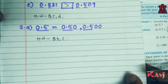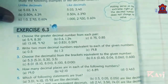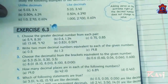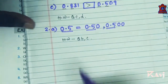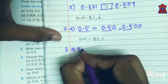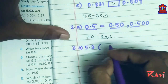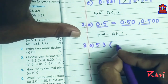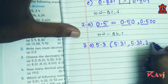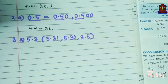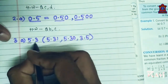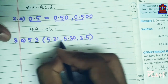In today's online class we will discuss it again if you have any problem. Now look at question number 3: choose the decimals from the brackets equivalent to the given number. Question 3a: 5.3 — find which is equal to 5.3 from the bracket: 5.31, 5.30, and 3.5.